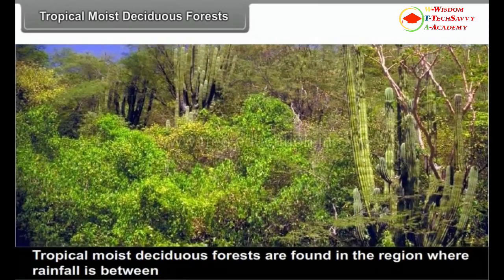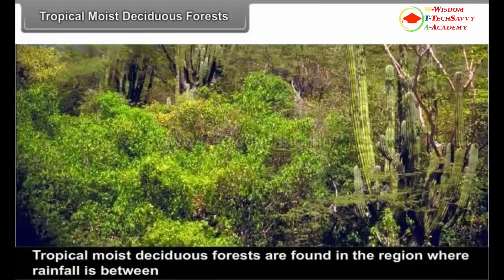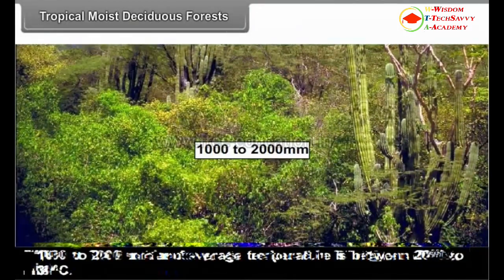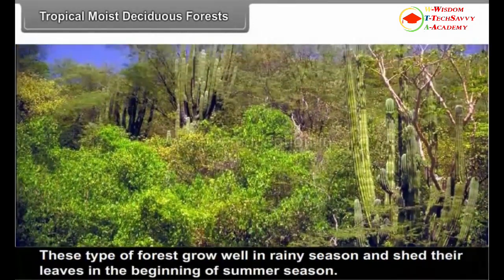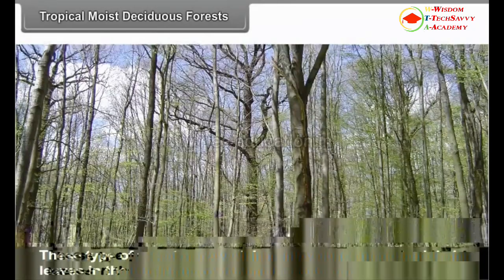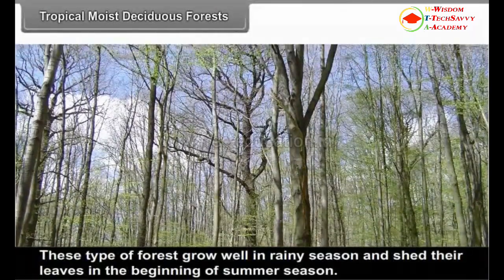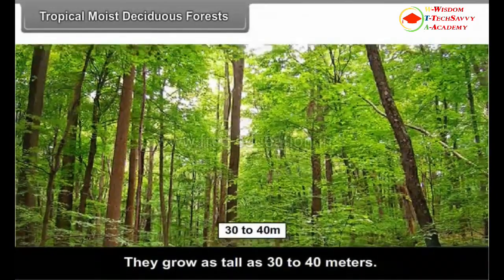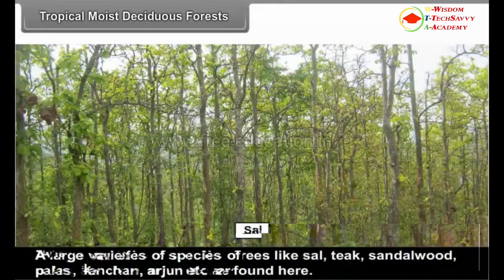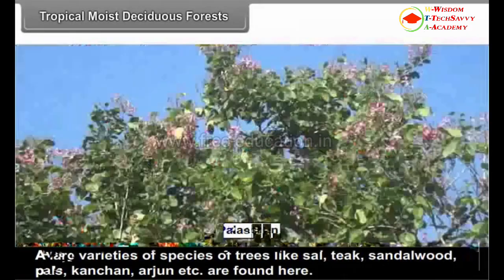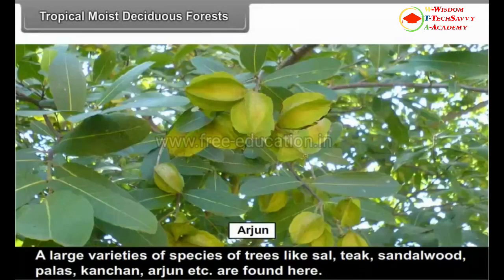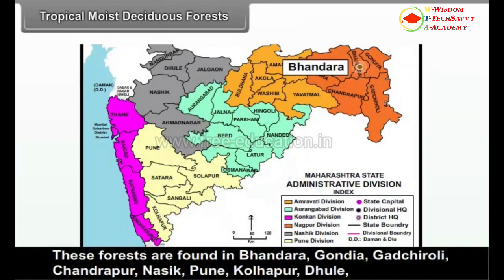Tropical Moist Deciduous Forests. Tropical moist deciduous forests are found in regions where rainfall is between 1000 to 2000 mm and the average temperature is between 20°C to 30°C. These types of forests grow well in the rainy season and shed their leaves at the beginning of the summer season. They grow as tall as 30 to 40 meters. A large variety of species of trees like Sal, Teak, Sandalwood, Paras, Kanchan, Arjun, etc. are found here.